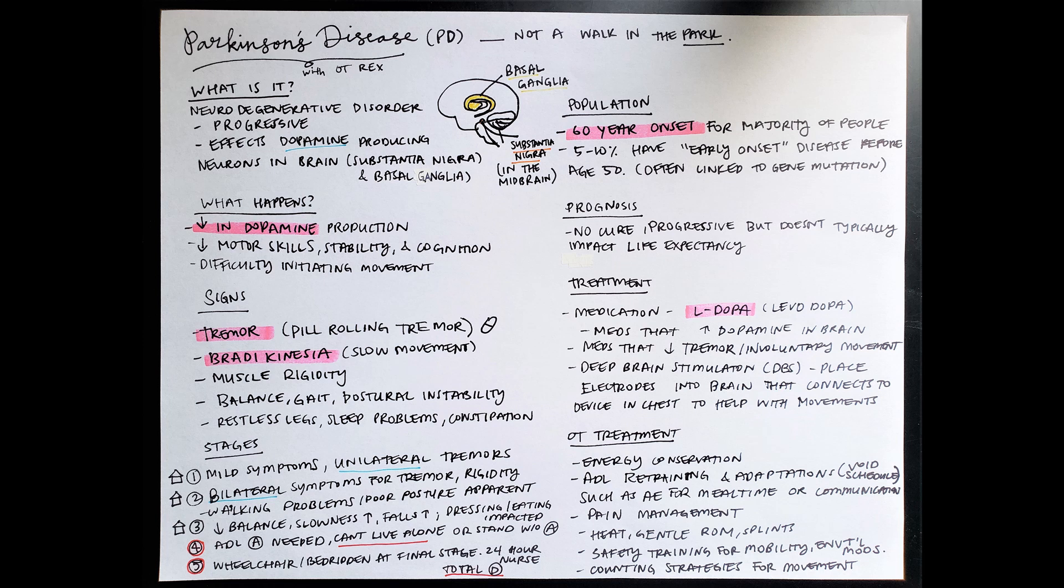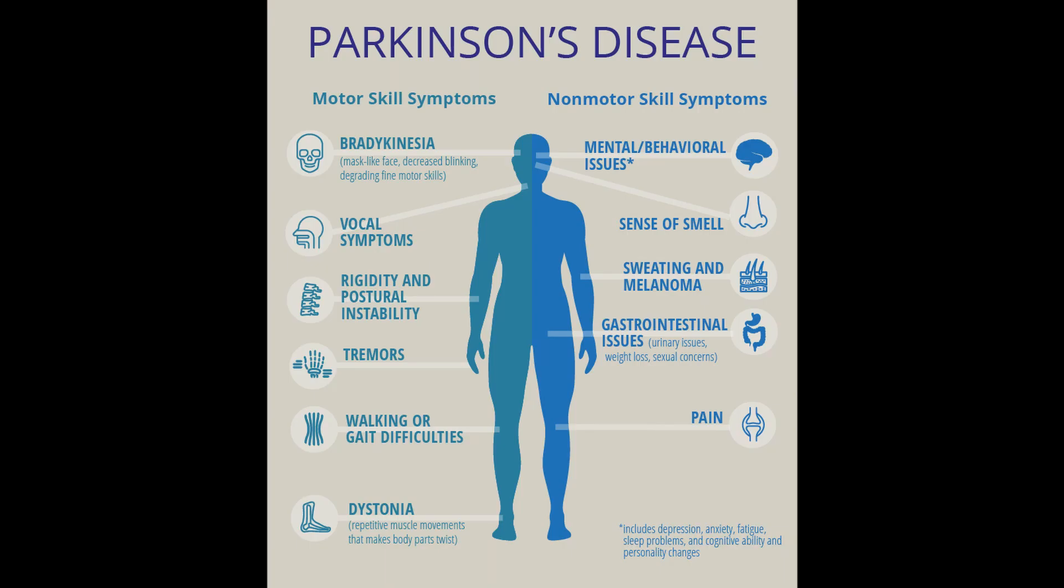Some key signs of Parkinson's are tremors, specifically a pill rolling tremor. A pill rolling tremor is the motion of you rolling a small pill between your fingertips. This is a tremor that's specifically associated to Parkinson's disease, but that doesn't mean that that's the only kind that an individual with Parkinson's can have. They can have other types of tremors. Bradykinesia is another big sign, and this is a fancy word for saying slow movement. And this goes back to how it becomes very challenging to initiate movements.